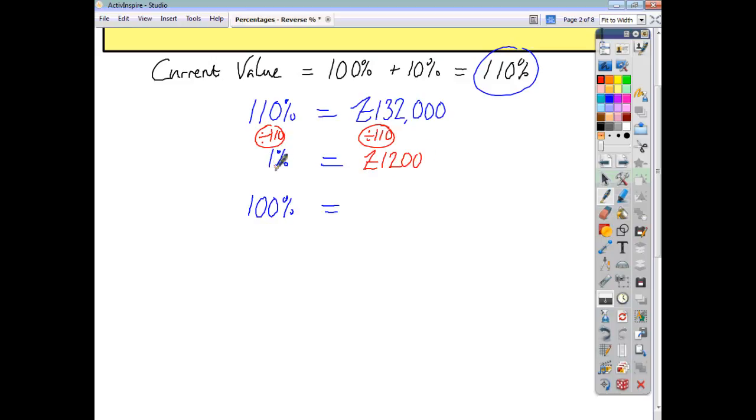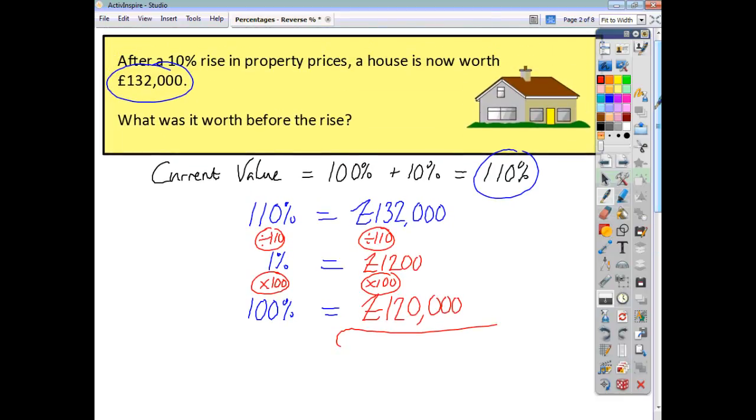And then how do I scale up from 1% to 100%? I just multiply both sides by 100. And that tells me that the value of the home was £120,000. Does that sound reasonable? Is that in keeping with the wording of the question? Yes, it is.